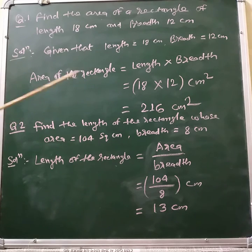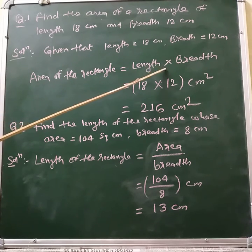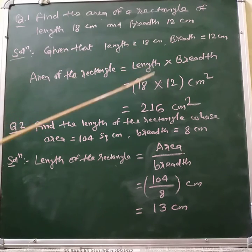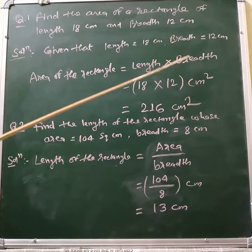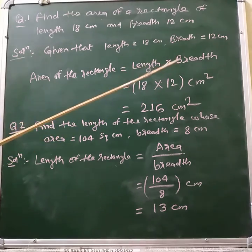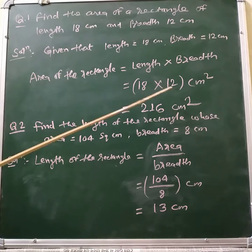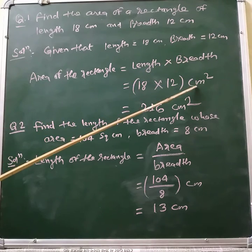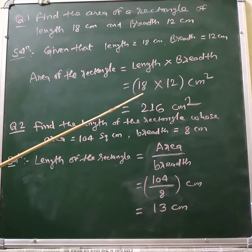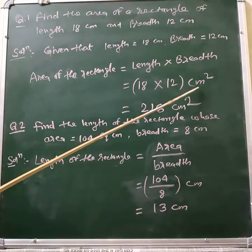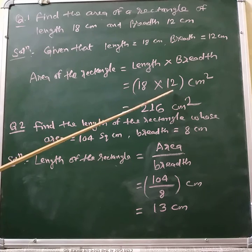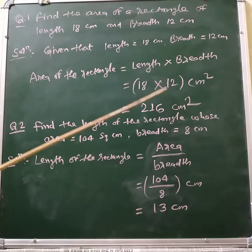Area of the rectangle is equal to length multiplied by breadth. Length is given 18 centimeter and breadth is given 12 centimeter, so we are multiplying 18 centimeter into 12 centimeter. Centimeter multiplied by centimeter gives square centimeter. So it is 18 multiplied by 12 square centimeter.